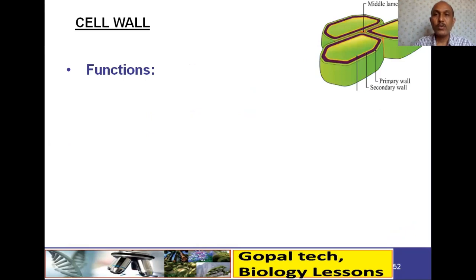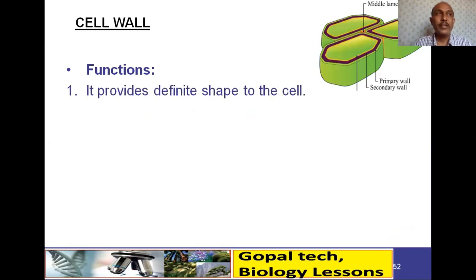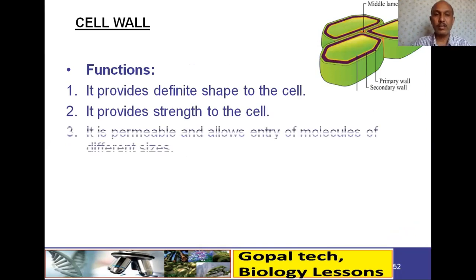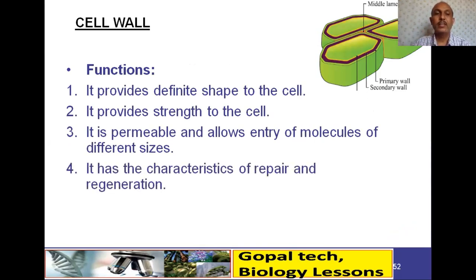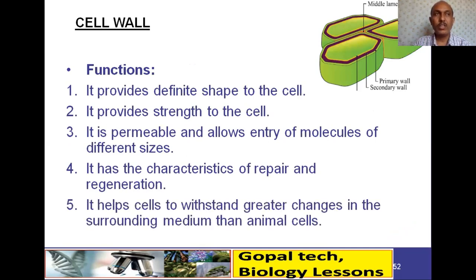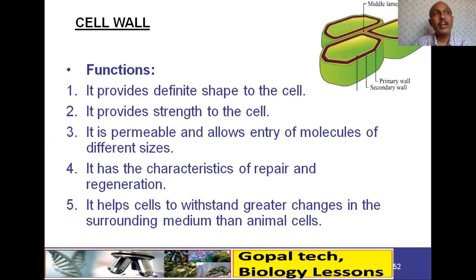The functions of the cell wall: it provides a definite shape to the cell, provides strength, and is permeable — allowing the entry of molecules of different sizes. It also has the characteristics of repair and regeneration. It helps cells withstand greater changes in the surrounding medium compared to animal cells, so plants can adapt to any kind of situation.